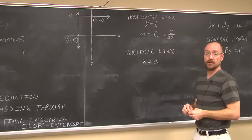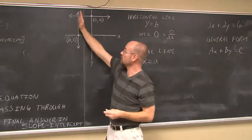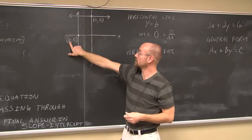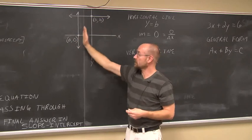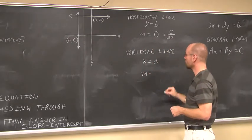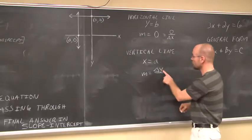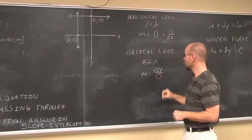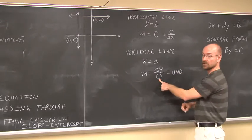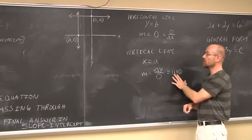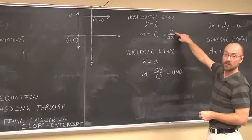A vertical line is defined by x equals some number — x never changes. If x never changes, let's explore its slope: there may be some change in y between two points, but the change in x is zero. Dividing by zero gives something undefined. So if you're ever told that a line has an undefined slope, you should know right away that it's a vertical line. For horizontal lines, y never changes so the slope is 0; for vertical lines, x never changes so the slope is undefined.